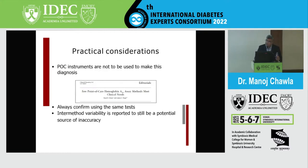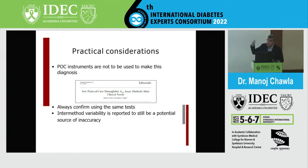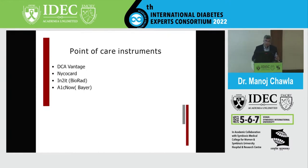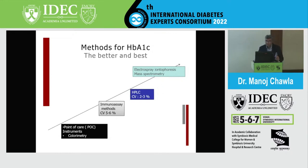Practically, point-of-care HbA1C instruments are popular and useful for monitoring patients, but should not be used as diagnostic tools. If used for diagnosis, always confirm with a laboratory test. They are good screening and monitoring methods. In the hierarchy of HbA1C measurement accuracy, electrospray ionophoresis ranks highest while point-of-care instruments are at the bottom in reproducibility and accuracy, though they remain practically relevant.